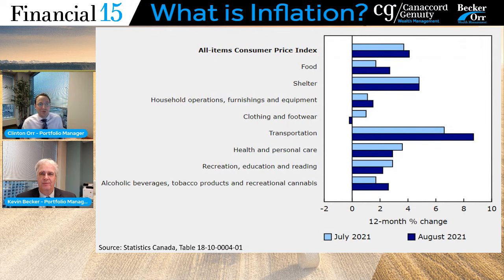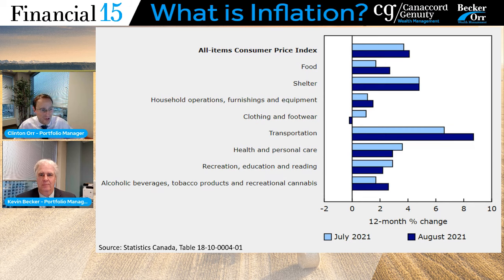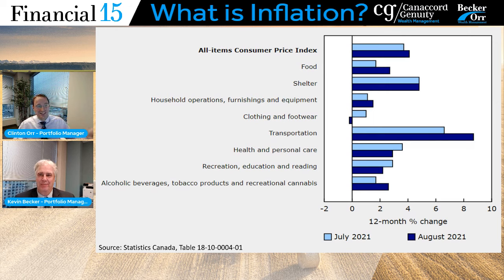They break it into eight categories. What you can see on the screen is from Statistics Canada, comparing August 2021 to July 2021 numbers — the most recent data as we're recording this. The eight categories are: food, shelter, household operations, furnishings and equipment, clothing and footwear, transportation, health and personal care, recreation, and the category for alcohol, tobacco, and cannabis. There are hundreds of little elements inside those categories — it is an expansive list. The headline inflation number covers all items, and then each category individually. That basket determines inflation.